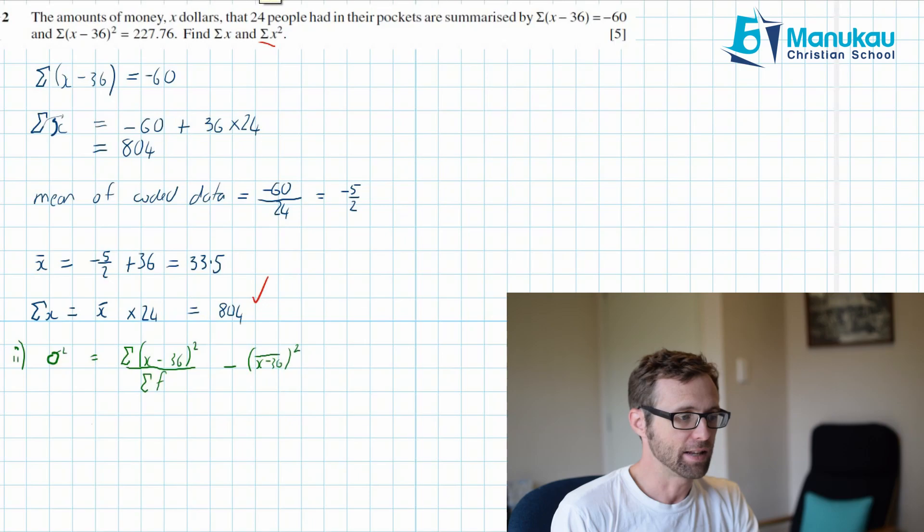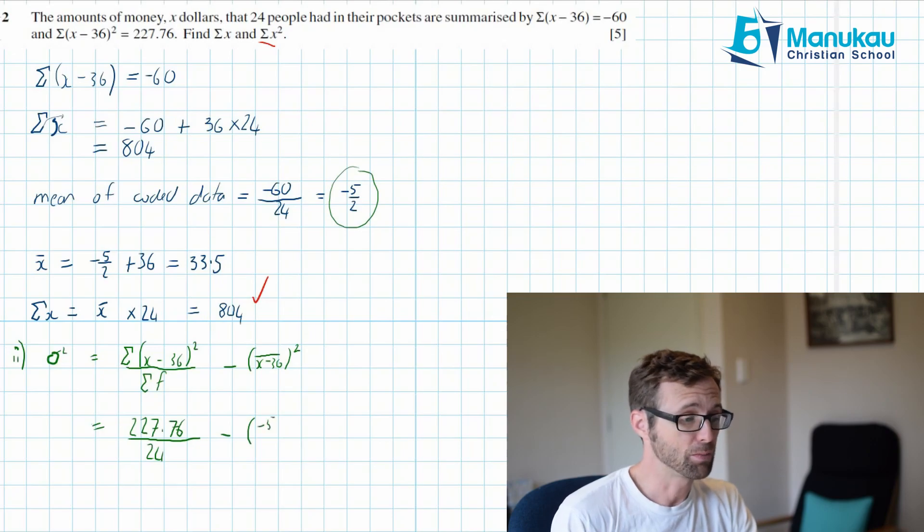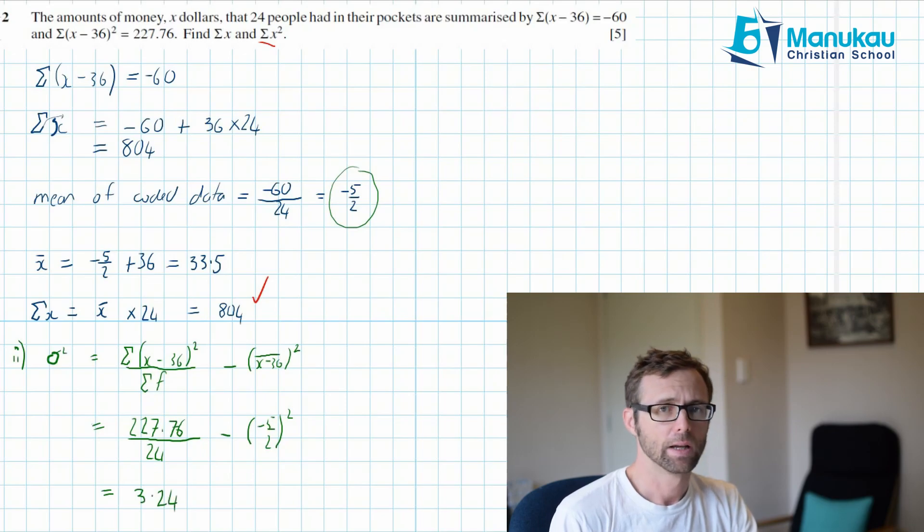Well, we know that the sum of X minus 36 all squared, we have been given that in the equation. So that's 227.76 I think. And we're going to divide that by 24. And then we're going to take our mean of the coded data, which we found over here. That's minus 5 over 2. So minus 5 over 2, and we square that. Now, when I chuck this into my calculator, I get 3.24.